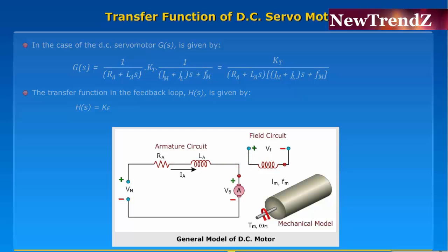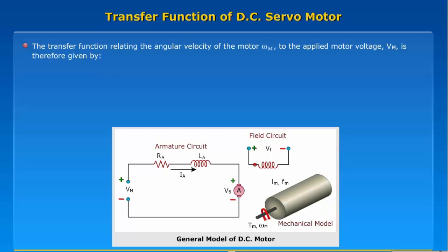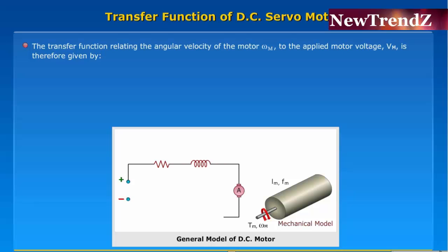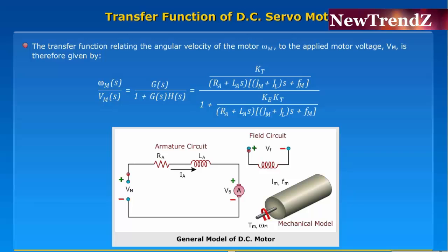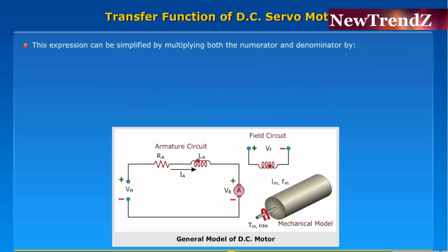The transfer function relating the angular velocity of the motor, omega_m, to the applied motor voltage, V_m, is therefore given by this expression. This expression can be simplified by multiplying both the numerator and denominator by (R_a + L_a*s).